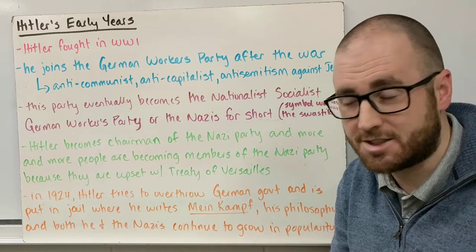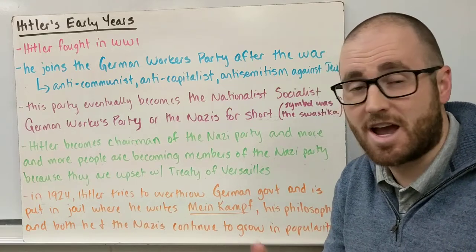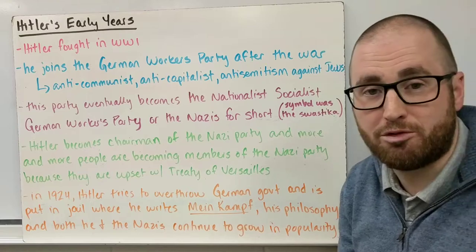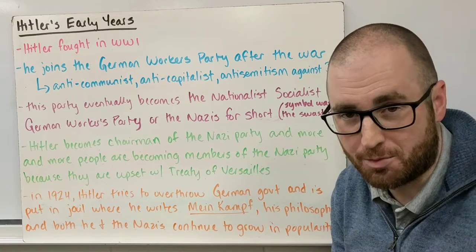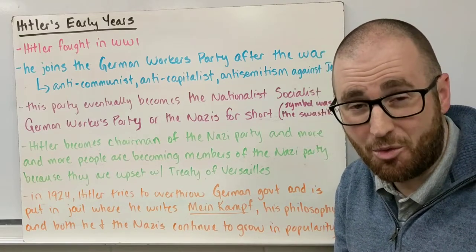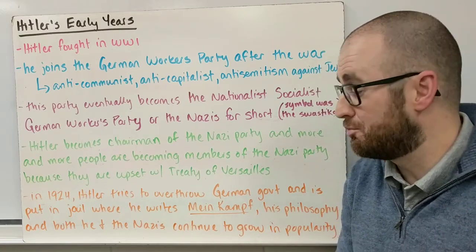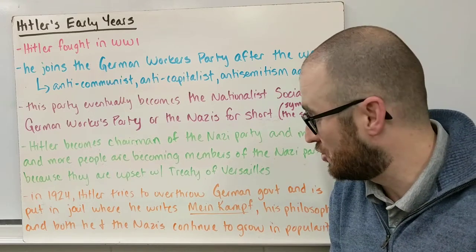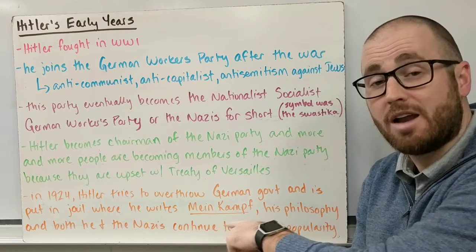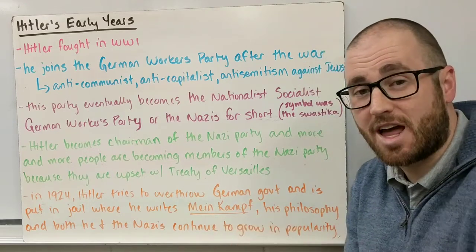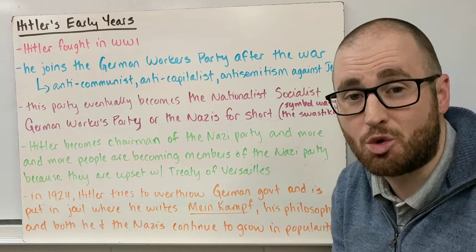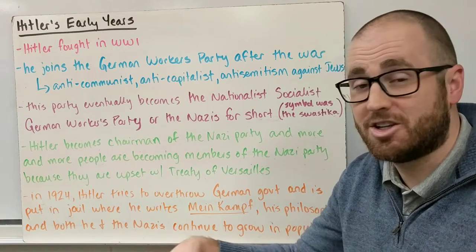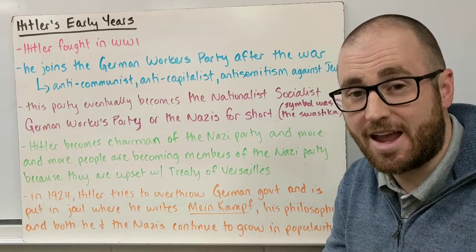In 1924, Hitler felt he had a good hold of the Nazi Party with strong membership, and he tried to overthrow the German government. It didn't work very well — he was put in jail for a good chunk of 1924, where he wrote Mein Kampf, which is his philosophical book laying out his philosophy.